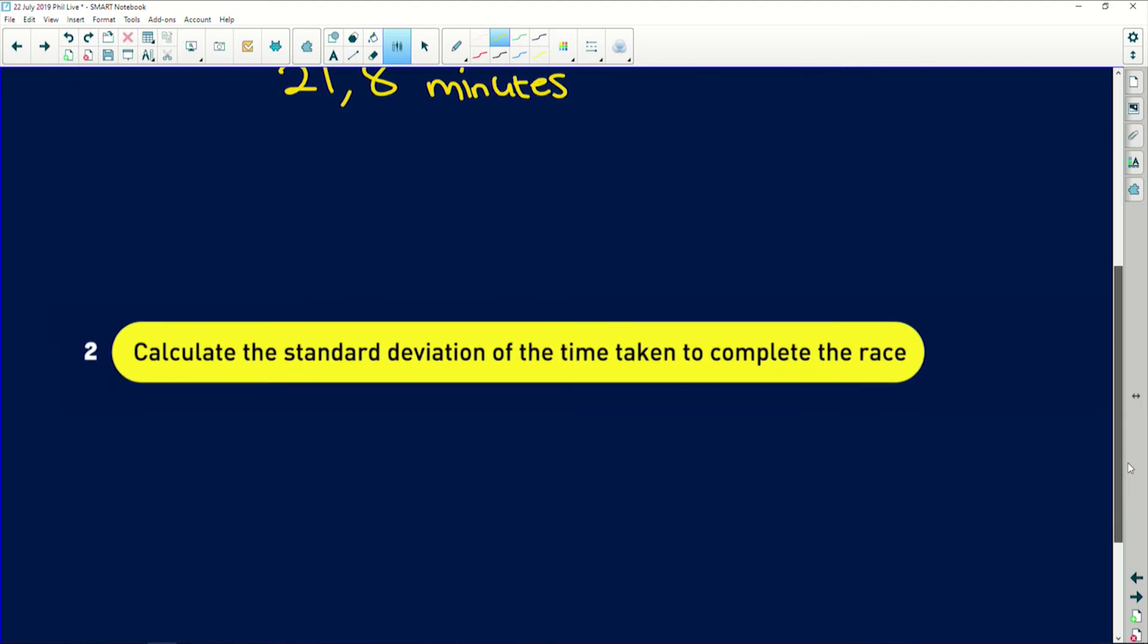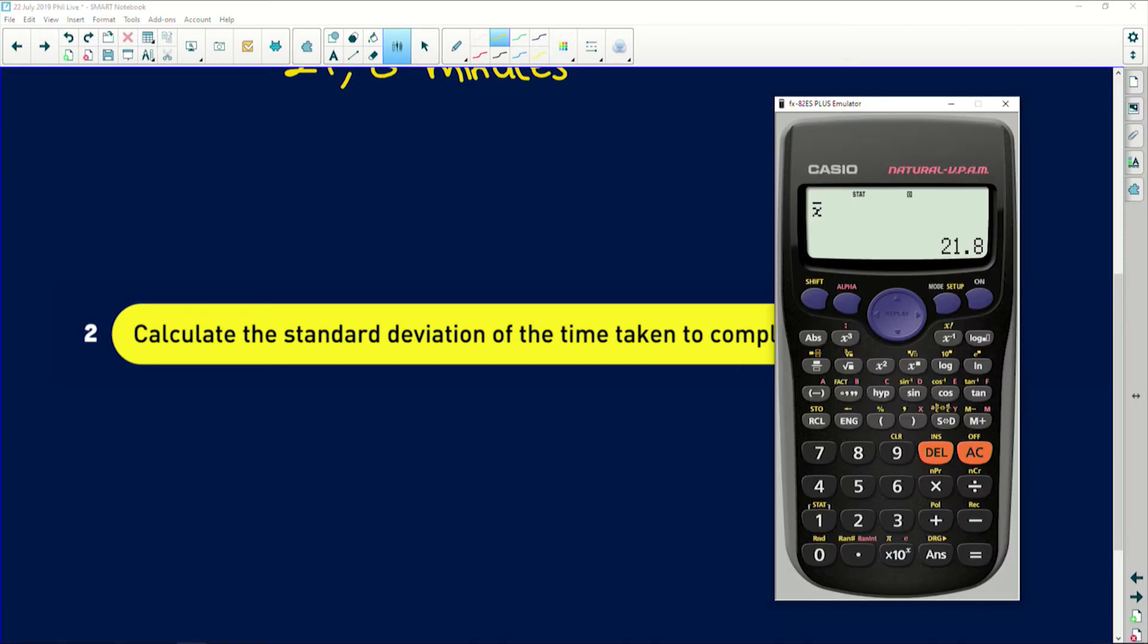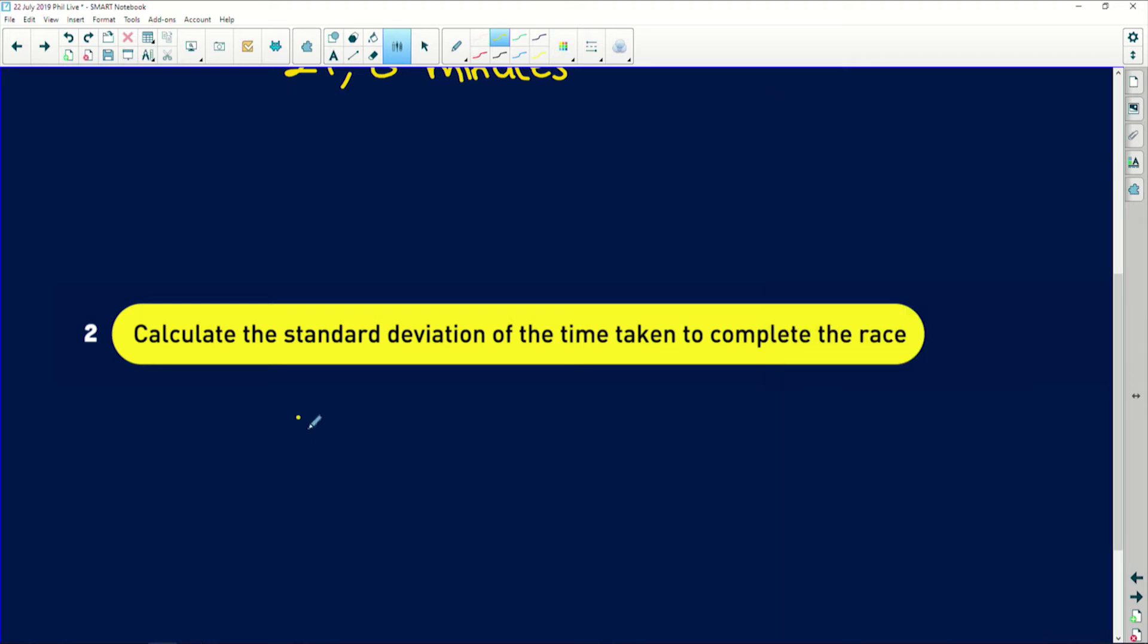Secondly, it says calculate the standard deviation of the time taken to complete the race. Well, this is where using the calculator comes in handy because we already have the data stored in our calculator. So again, press Shift, 1 for stats, 4 for variance because we're still looking at variant variables. And remember, standard deviation is given by the sigma over here. So you would press 3 and equals. And the standard deviation is equal to 3.94 minutes. Easy peasy stuff.